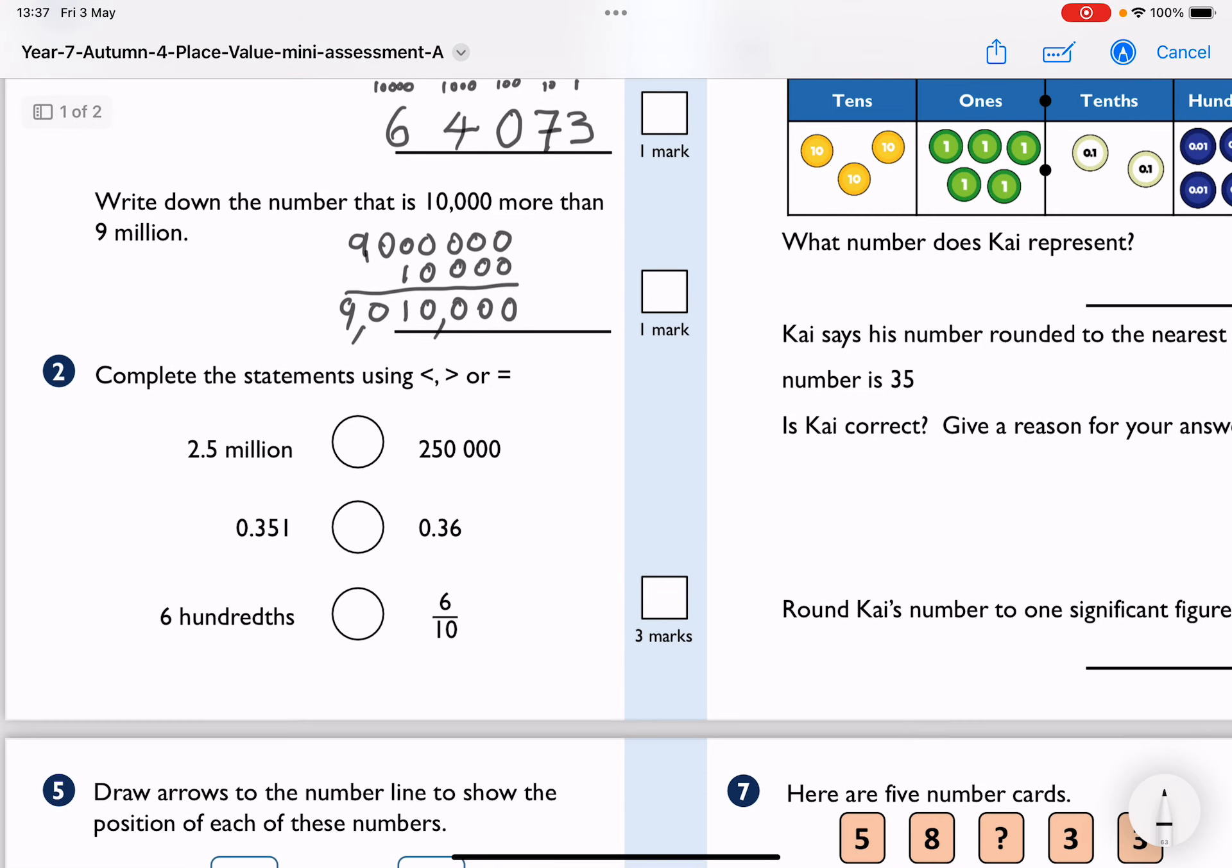Right, complete the statements using less than, greater than, or equal to. 2.5 million is 2,500,000, which is more than 250,000. 0.351 and 0.36. The easy way of comparing these is by having the same amount of decimal places. So if I've got three decimal places on both, 3,5,1 is less than 360. That's the way that I do it.